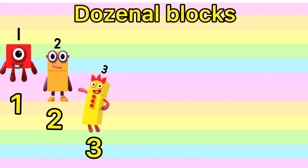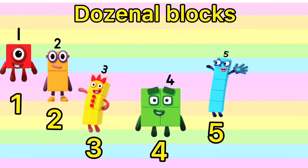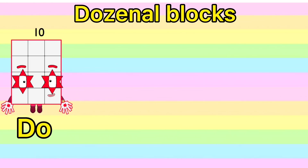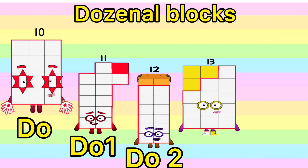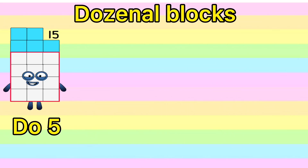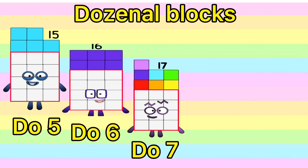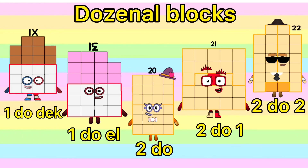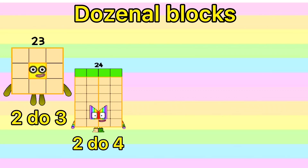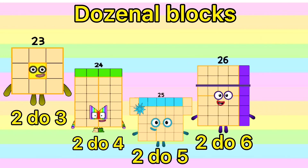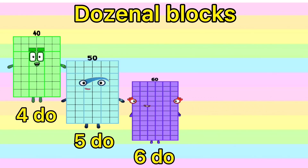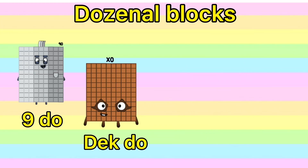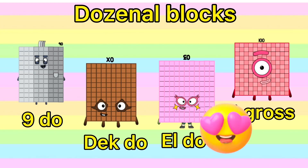1, 2, 3, 4, 5, 6, 7, 8, 9, tag, yell, do. Do 1, do 2, do 3, do 4, do 5, do 6, do 7, do 8, do 9. 1 do tag, 1 do El. 2 do, 2 do 1, 2 do 2, 2 do 3, 2 do 4, 2 do 5, 2 do 6. 3 do, 4 do, 5 do, 6 do, 7 do, 8 do, 9 do, tag do, El do. And 1 gross.